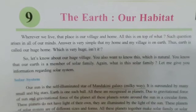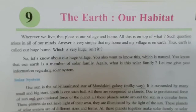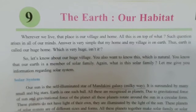Question number 25: What is the revolution or annual motion of the earth called? The earth completes one full circle around the Sun in 365 days and 6 hours. This annual motion is called revolution.